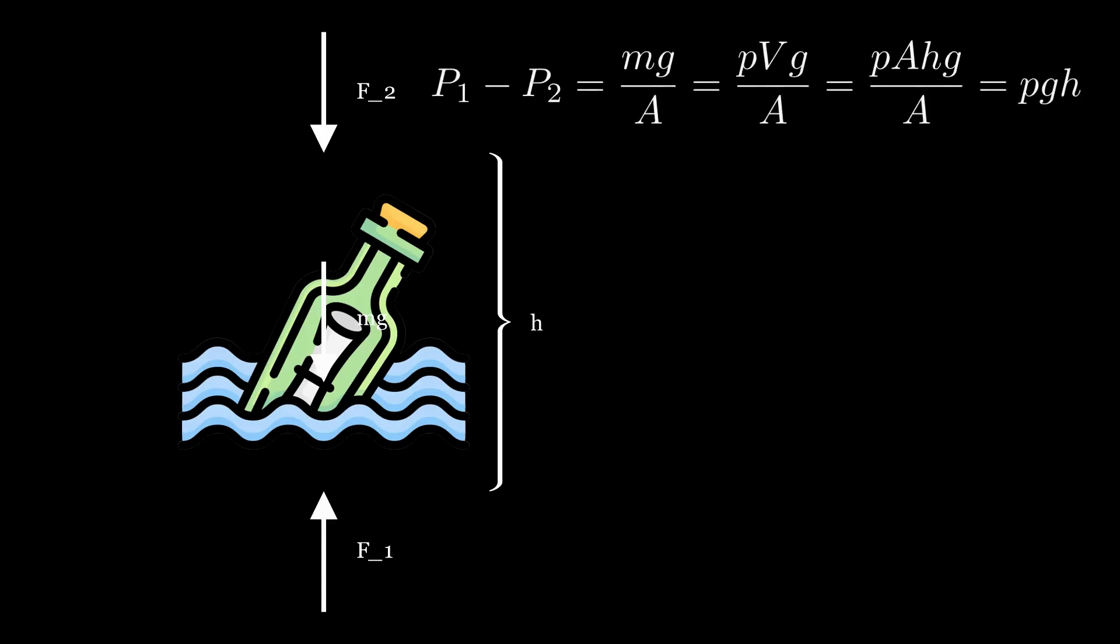Now let's imagine a bottle floating in water. We have the force due to pressure of the water, the force due to atmospheric pressure on the bottle, and the weight of the bottle. If we do some algebraic manipulation, we see that the difference in pressure is just density times gravity times height.